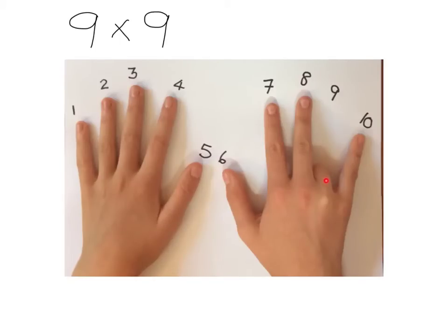We then have a look and we see to the left we've got 8 fingers, and to the right of the bent finger we just have 1, and we have 81 as our answer. Just a little trick and it only works for the 9 times table, but it can be quite helpful if you've forgotten something.